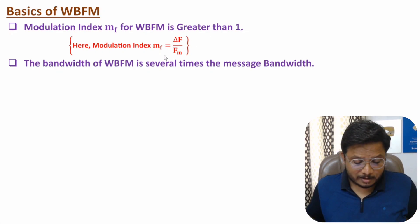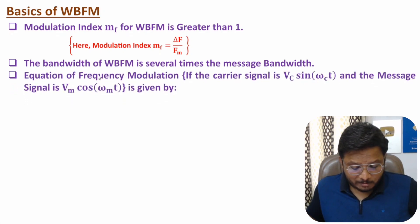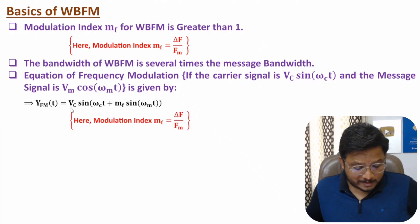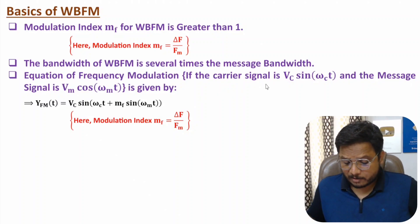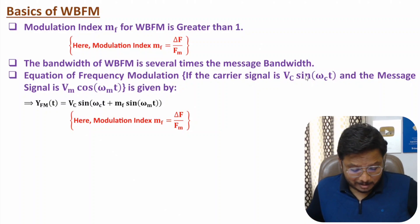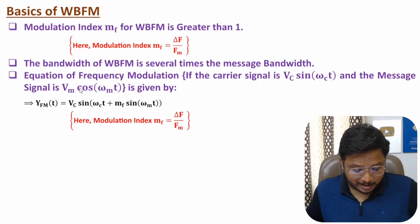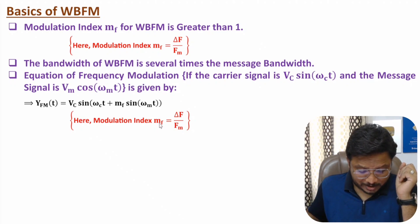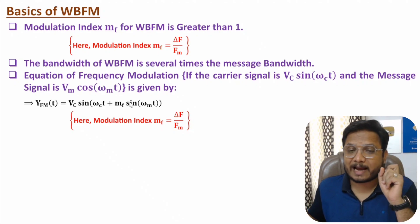How many times the bandwidth is present can be understood based on the equation of frequency modulation. If we have carrier signal Vc·sin(ωc·t) and message signal Vm·cos(ωm·t), then the FM signal is Vc·sin(ωc·t + mf·sin(ωm·t)). Note: if the carrier has sine and message has cosine, the FM signal has sine with sine inside. mf here is the modulation index.